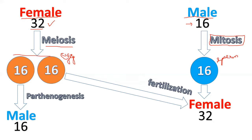Now, how is a male formed? The egg has two options. Some eggs will directly convert into an organism and become a male through the process called parthenogenesis. The egg or ovum directly converts into a male without fertilization. When parthenogenesis occurs there is no fertilization, which is why the male has 16 chromosomes — the same number as the egg — because there is no fertilization, they get only one set of chromosomes.